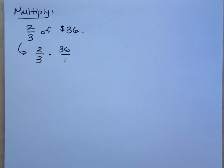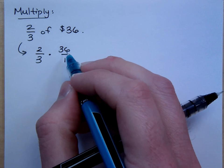Do your work the smart way. Can you reduce anything here before you multiply? What's the common factor between 3 and the 36?